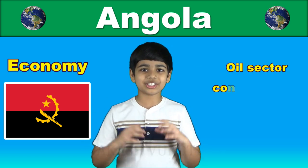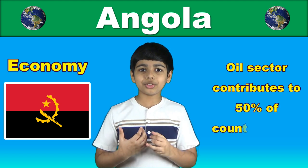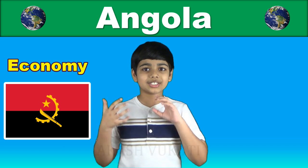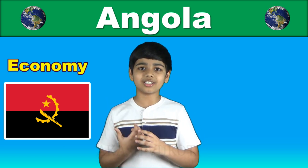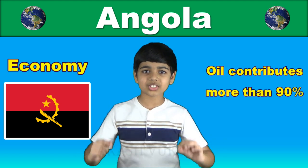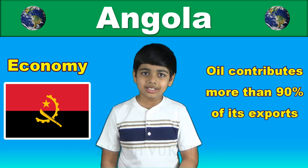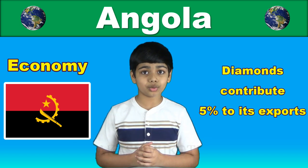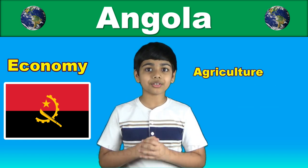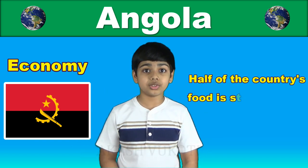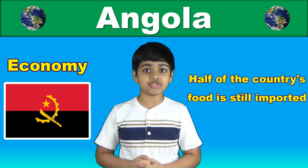Oil production and its supporting activities contribute to around half of the country's GDP, more than 70% of the government revenue, and more than 90% of the country's exports. Diamonds contribute an additional 5% to exports. Subsistence agriculture provides the main livelihood for most of the people, but half of the country's food is still imported from other countries.